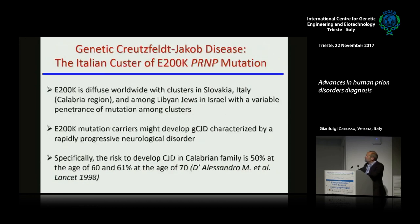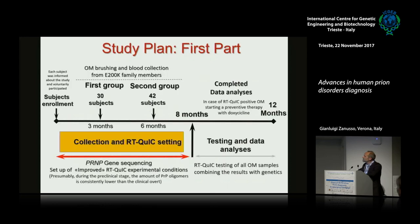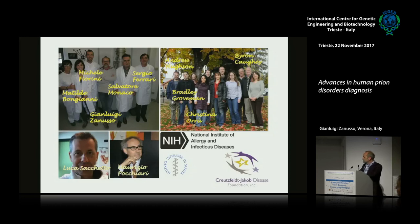We did this study in E200K — a family from Calabria. We are doing olfactory mucosa sampling in the preclinical stage. We collected 72 subjects, of which 21 are carriers of the E200K mutation. We are conducting an 8-month study testing analysis using the improved conditions. This is my group in Verona. Salvatore Monaco is my director. Ferrari and Matilde Bongiani did most of the RT-QUIC experiments. Our collaboration in Montana with Byron Cowie, Cristina Rueg-Ruffman, Luca Sacchetto, and the group of Maurizio Pochari in Rome. Thank you very much for your attention.